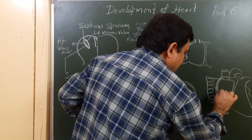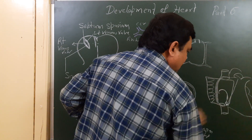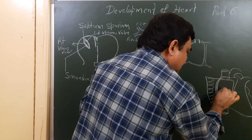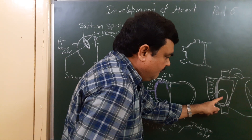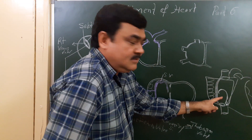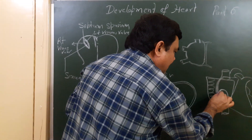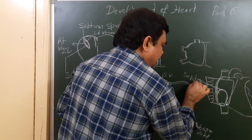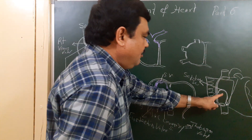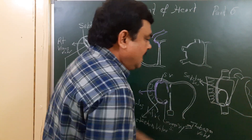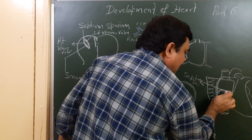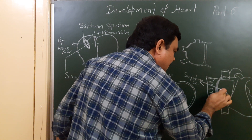Here is septum primum, and here is septum secundum. The fossa ovalis is formed here — this is the fossa ovalis — and here is the limbus fossa ovalis, which is formed by septum secundum. Septum secundum forms the limbus fossa ovalis.